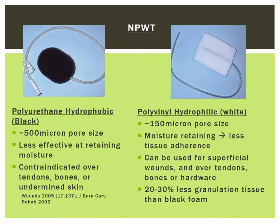In terms of the sponges, the pore size determines their use. The black sponge has a larger pore size of approximately 500 microns; therefore, they absorb moisture and are contraindicated over tendons and bone. On the other hand, the white sponge has a much smaller pore size of only approximately 150 microns, which allows more moisture retention while still creating a negative pressure environment. As a result, there is less granulation tissue formation with the white sponge, but it can be used over tendons, bone, and hardware implants. Thank you — this completes part one of the bioequipment talk.